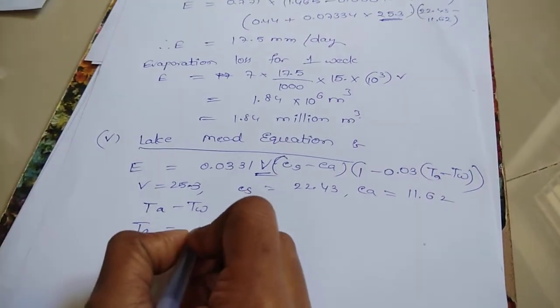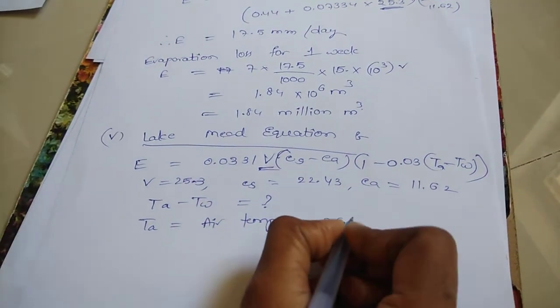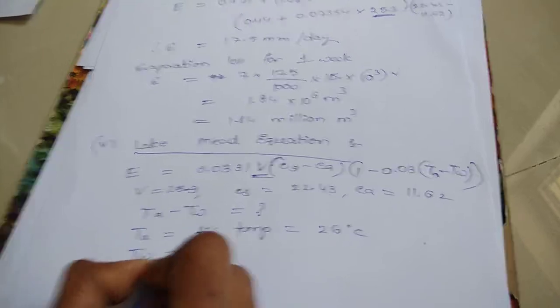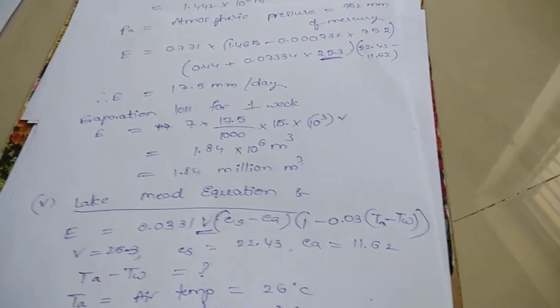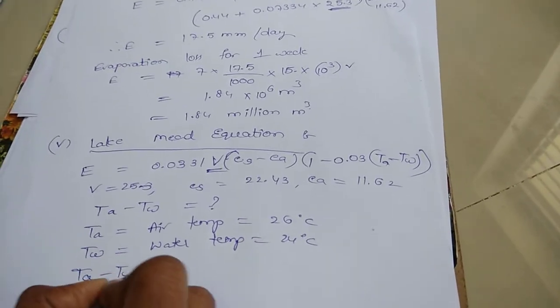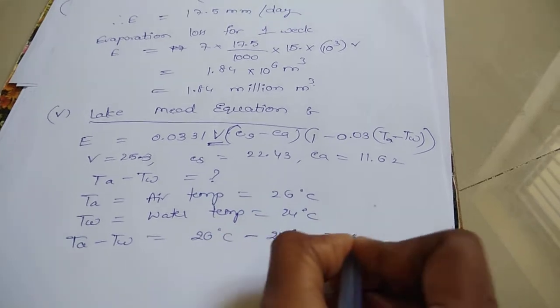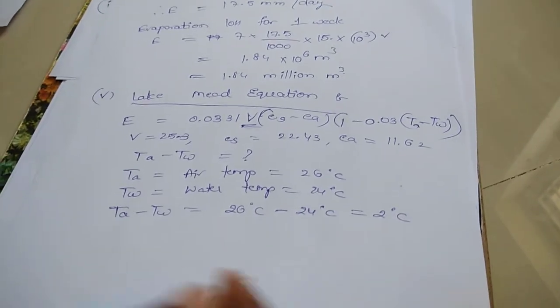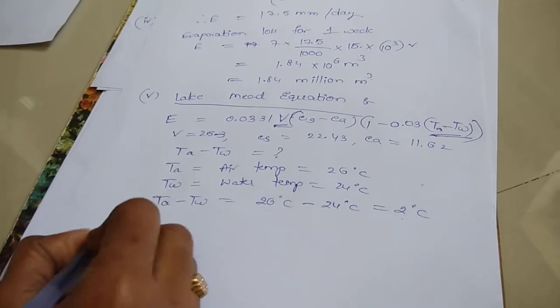So, here TA means air temperature. Air temperature is 26 degree centigrade. TW means water temperature, that is 24 degree centigrade. So, TA minus TW equal to 26 degree centigrade minus 24 degree centigrade. That is 2 degree centigrade. Substitute the value of TA minus TW equal to 2 degrees.